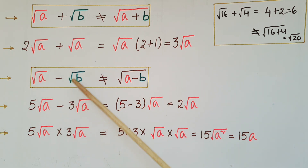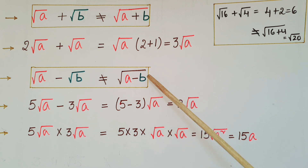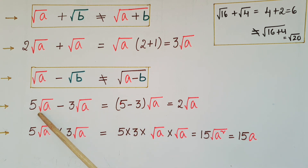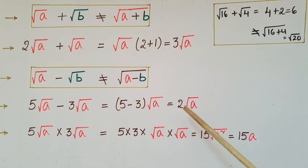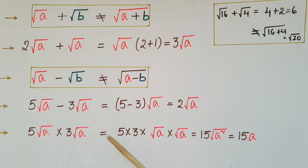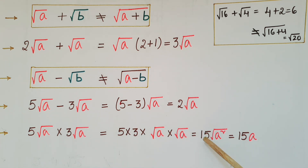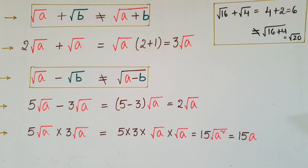Similarly, root a − root b is NOT equal to root(a − b). For subtraction of like radicals: 5·root a − 3·root a = (5 − 3)·root a = 2·root a. For multiplication: 5·root a × 3·root a = 5×3×root a×root a = 15×a = 15a.